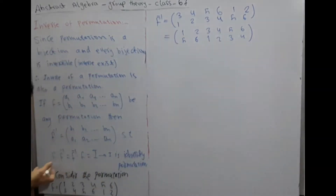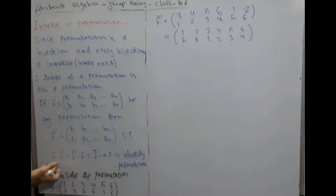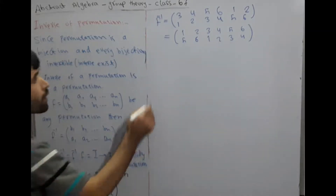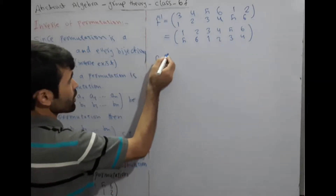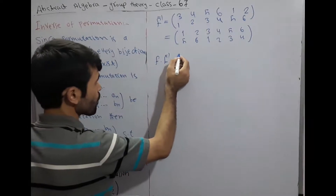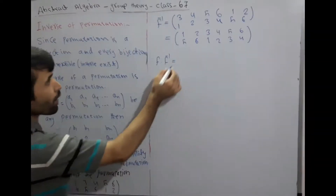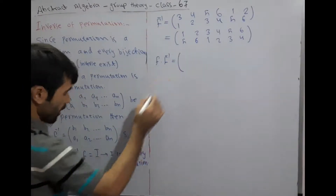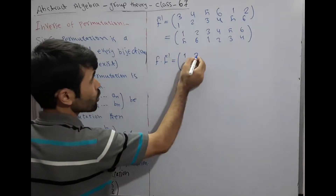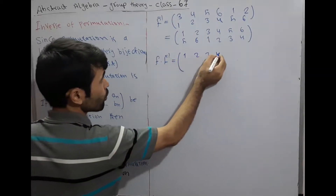Now we verify F∘F⁻¹ = I and F⁻¹∘F = I. First, F∘F⁻¹ equals F = (1 2 3 4 5 6 / 3 4 5 6 1 2) into F⁻¹ = (1 2 3 4 5 6 / 5 6 1 2 3 4). Computing each image: image of 1 under F is 3, image of 3 under F⁻¹ is 1; image of 2 under F is 4, image of 4 under F⁻¹ is 2; and so on for all elements.